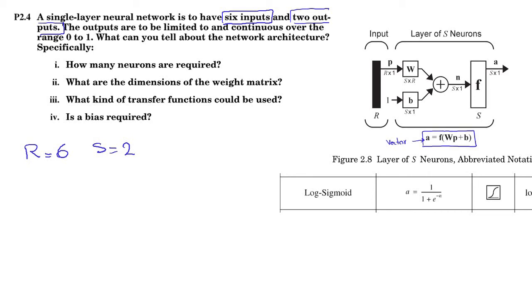And then, the first question is, how many neurons are required? The number of neurons is s. So, you know, it's 2.